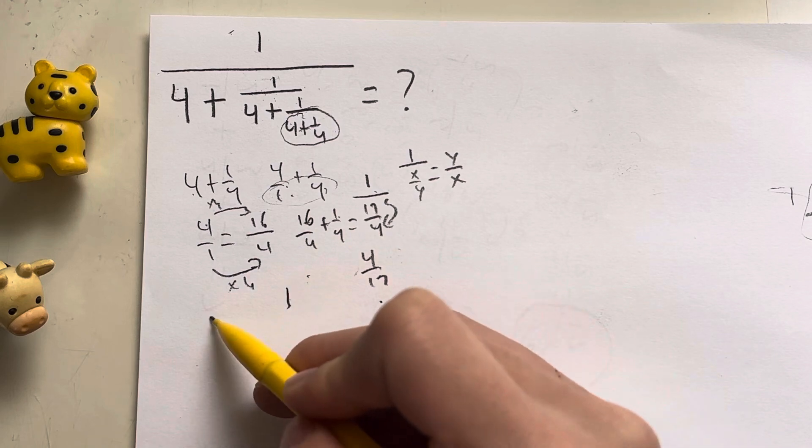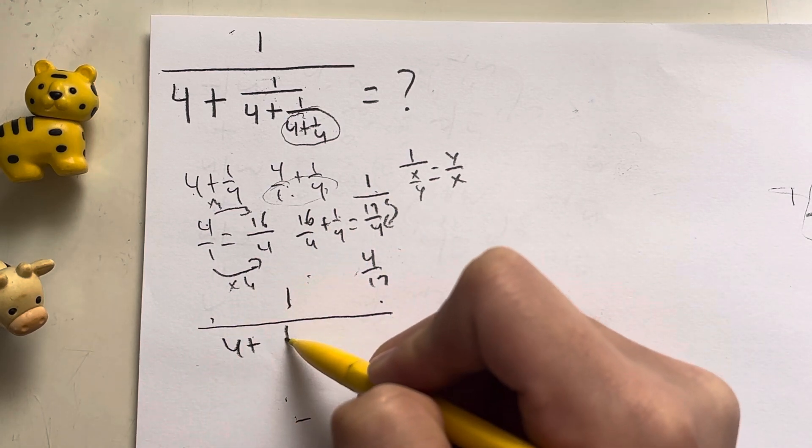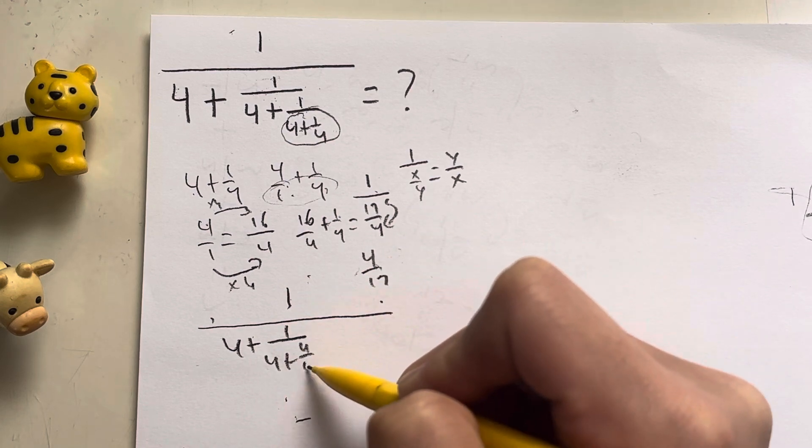So rewriting this big expression, that becomes 1 over 4 plus 1 over 4 plus 4 over 17.